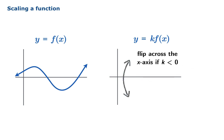When k is negative, you also get a flip. The most basic case here is when k equals negative 1, and you get a pure flip with no stretching or compression.